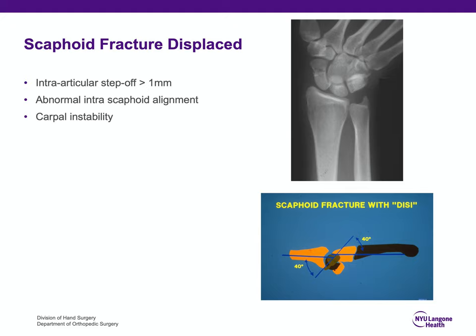When scaphoid fractures displace, there is often a step-off of a millimeter or more between the two fracture fragments. Measuring the parameters for scaphoid alignment would show abnormal intra-scaphoid alignment and carpal instability — usually a DISI pattern of wrist instability, which happens because the distal fracture fragment flexes, resulting in the DISI alignment.